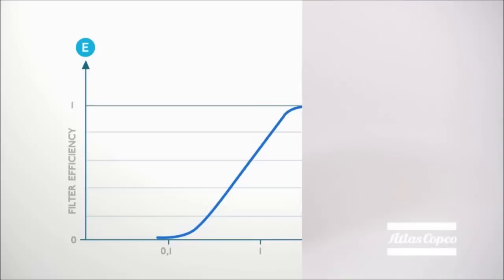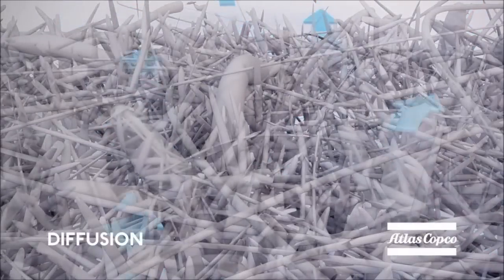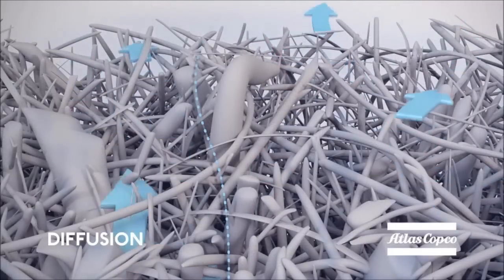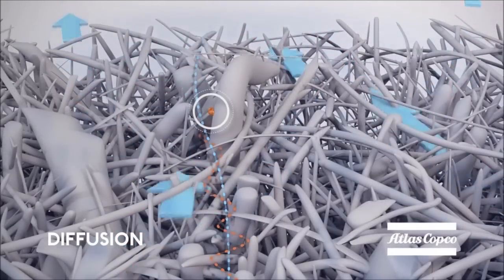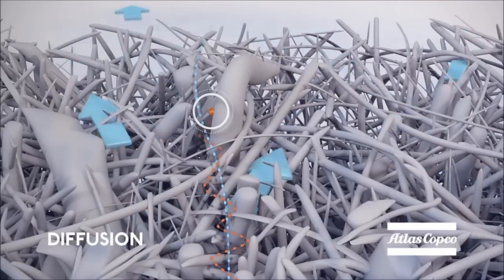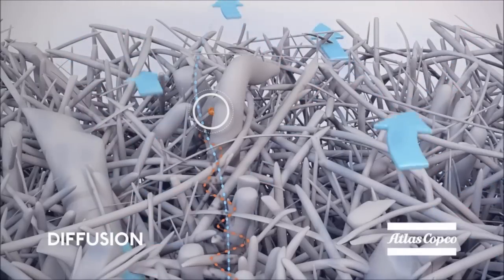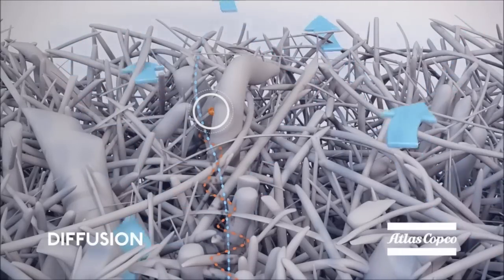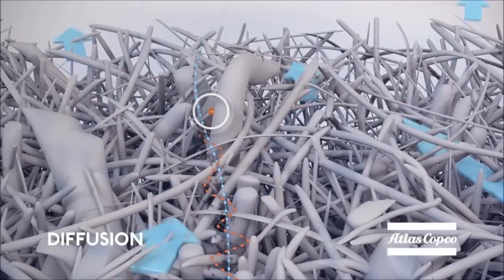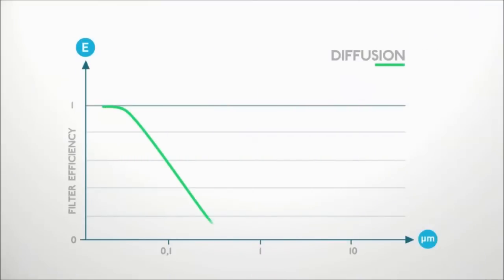The third mechanism is diffusion, and this takes care of the smallest particles. These small particles do not strictly follow the streamlines. They move randomly due to collisions with gas molecules. We call this Brownian motion. Because of this erratic movement, they are bound to collide with a fibre. The smaller the particle is, the higher its freedom of movement and therefore the higher the probability that it will encounter a fibre. Capture by diffusion becomes more important with decreasing particle size.